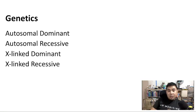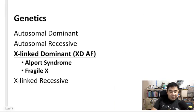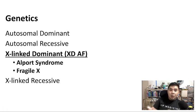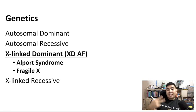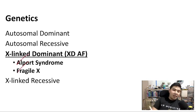If you're going to choose randomly, it's probably not going to be X-linked dominant. Why? Because X-linked dominant diseases are very rare. For the purposes of exams, there are just two diseases you have to remember: Alport syndrome and Fragile X.